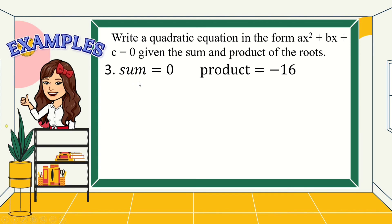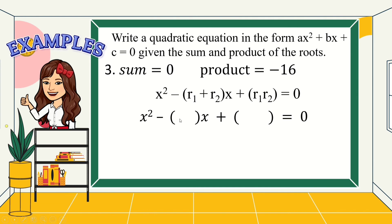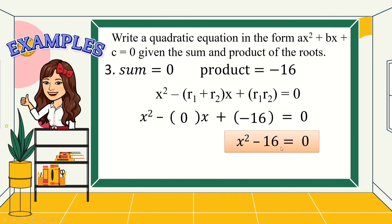In our third example, the sum and product are given. We just substitute the sum and product into our equation. We have x squared minus the sum, which is 0, times x plus the product, which is negative 16. Simplifying, we have x squared minus 16 equals 0. We don't have a linear term since the sum is 0, and positive times negative gives negative.